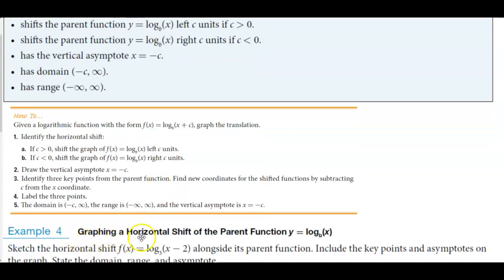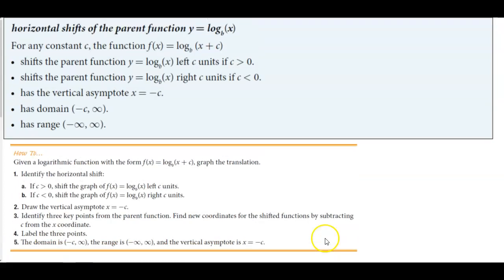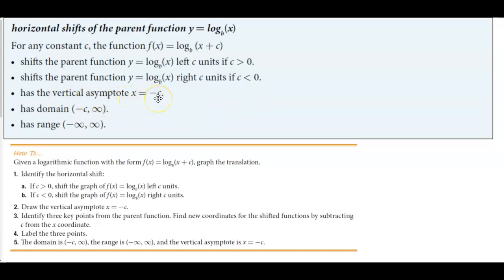For example number four we're going to be graphing a horizontal shift of the parent function y = log base b of x. For any constant c, the function f(x) = log base b of (x + c) shifts the parent function left c units if c is greater than zero, and right c units if c is less than zero. It has a vertical asymptote at x = negative c, a domain of negative c to infinity, and a range of negative infinity to positive infinity.